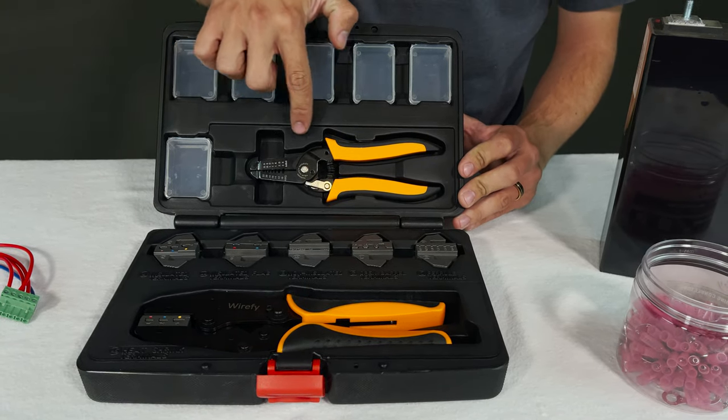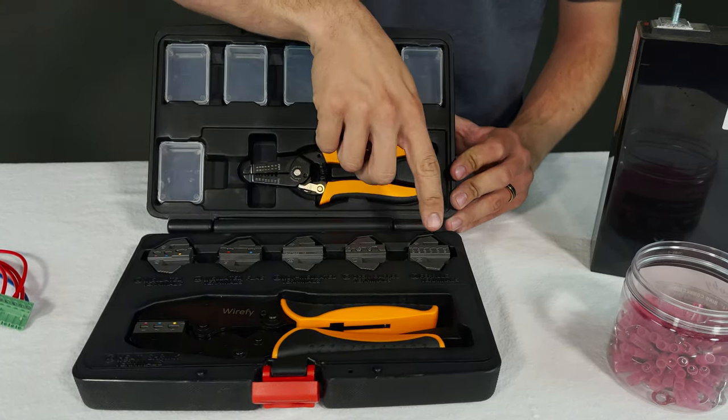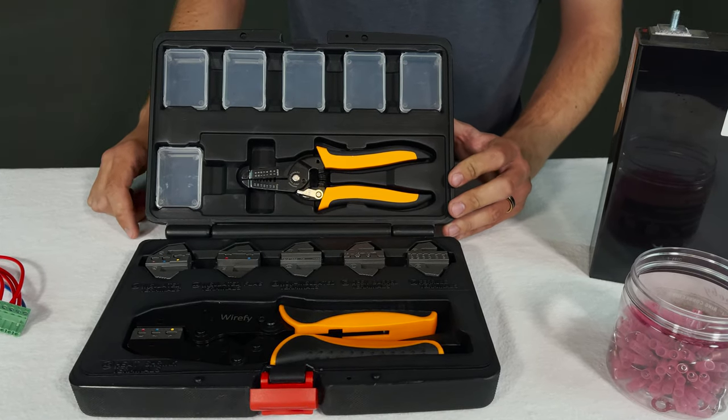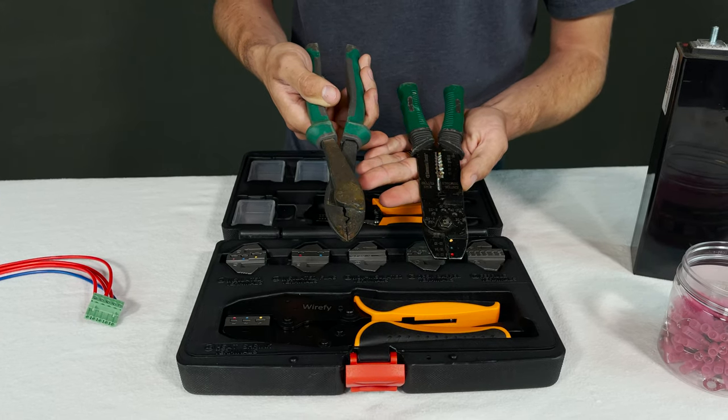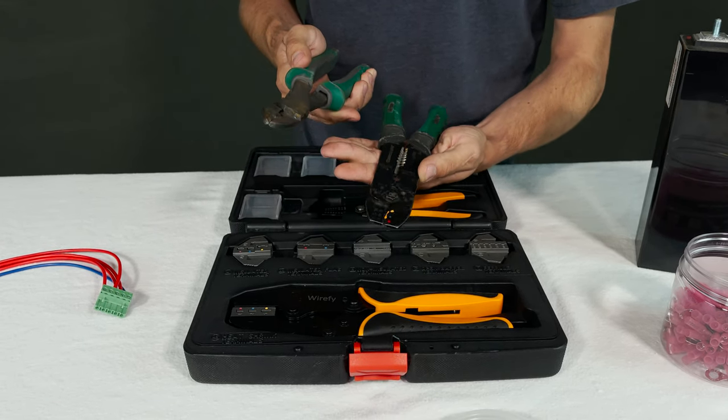But this kit comes with a set of wire strippers and all the crimp dies you could possibly need. And for too long we've been using crimping tools like these ones from Commercial Electric and these ones do not do a very good job of crimping, especially once you see what this can do.